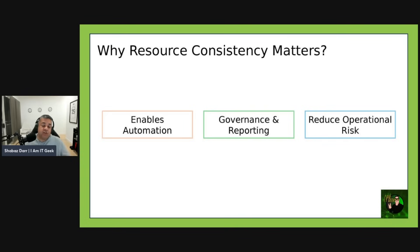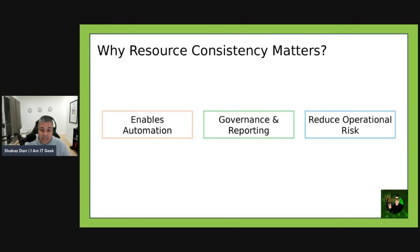Why does resource consistency matter? As your cloud environment grows — and it will grow exponentially — maintaining consistency becomes critical and difficult. Without it you risk chaos. I've seen it in massive environments where there's no consistency and it causes a nightmare: resources scattered across multiple subscriptions, inconsistent naming, missing tags, and massive security gaps. Consistency enables automation — standardized naming and tagging allow scripts and policies to work much more reliably.